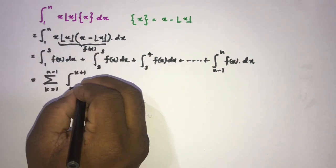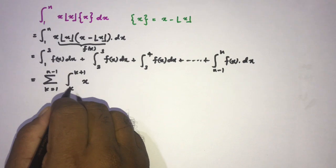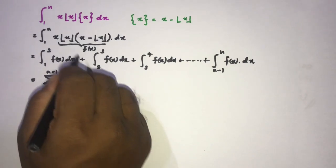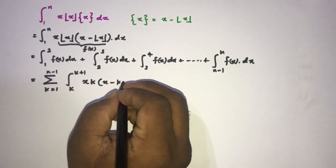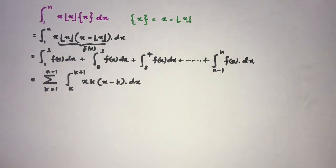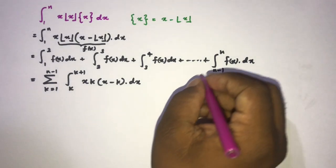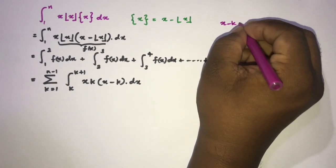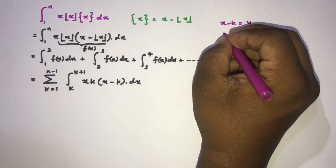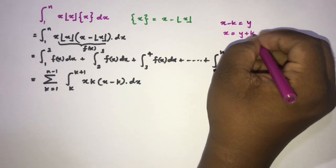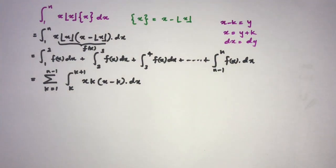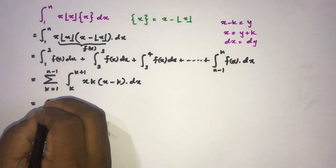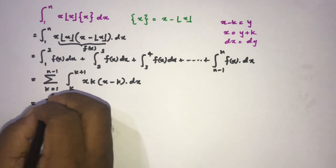Within each interval from k to k+1, floor(x) equals k, so the integrand becomes x times k times (x minus k) dx. I'm going to take the substitution: let x minus k equal y, so x equals y plus k, and dx equals dy.